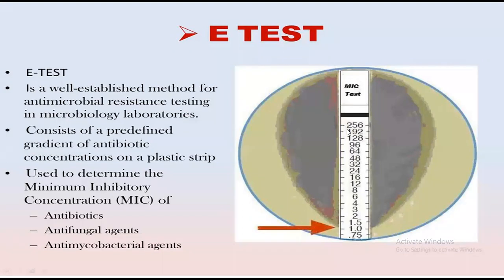Now, the introduction of the E-test: the E-test is a well-established method for antimicrobial resistance testing in microbiology laboratories. It is used to check the antimicrobial resistance and sensitivity of microorganisms against antibiotics and other antimicrobial drugs. It consists of a predefined gradient of antibiotic concentration on a plastic strip, used to determine the Minimum Inhibitory Concentration. Antibiotics, antifungal agents, and antimycobacterial agents can all be used with this strip.